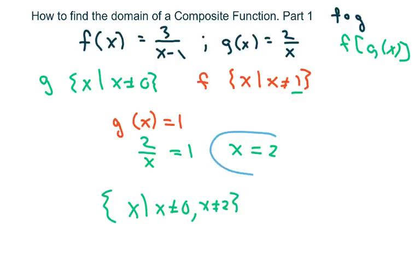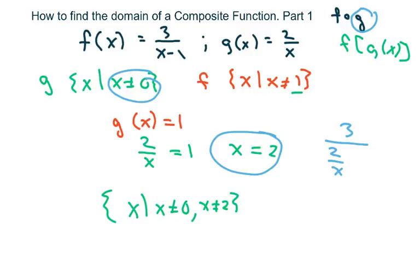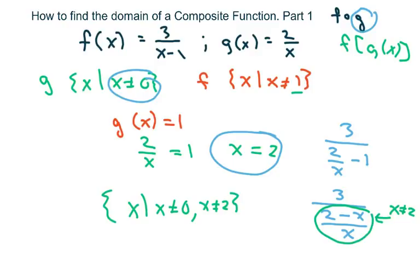Let me show you why it works. When you compose these functions, you put the inner function inside the outer function. You get 3 over 2 over x, minus 1, which simplifies to 3 over 2 minus x over x. If x equals 2, you'd have 2 minus 2 equals 0 over 2, which equals 0 in the denominator.